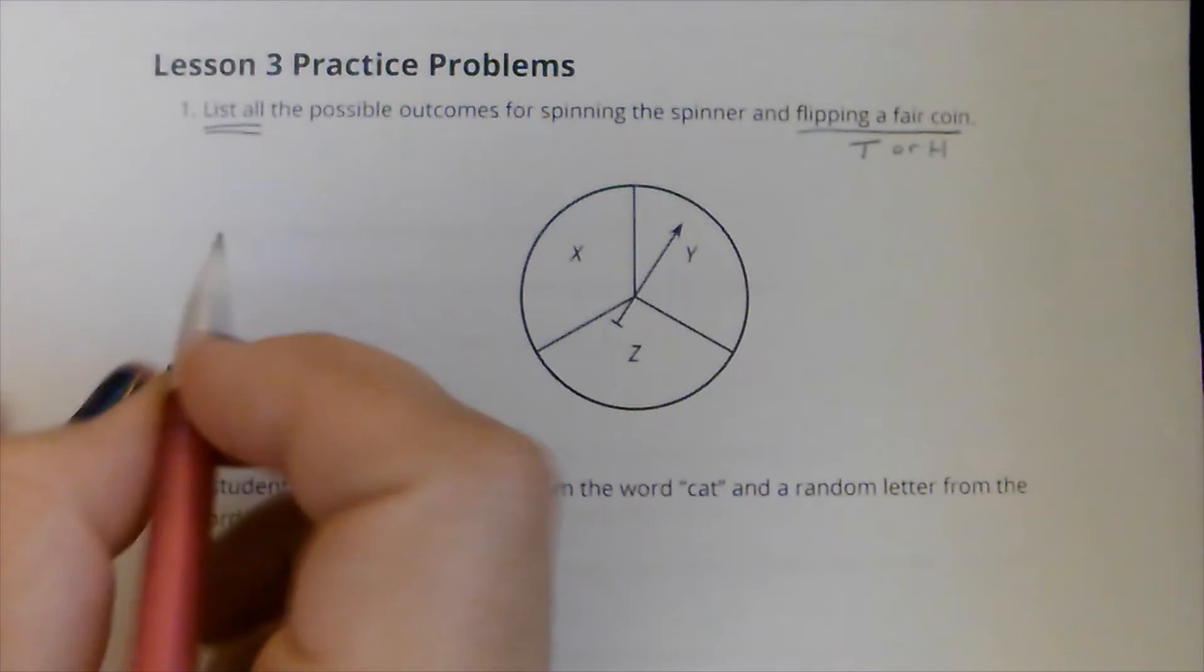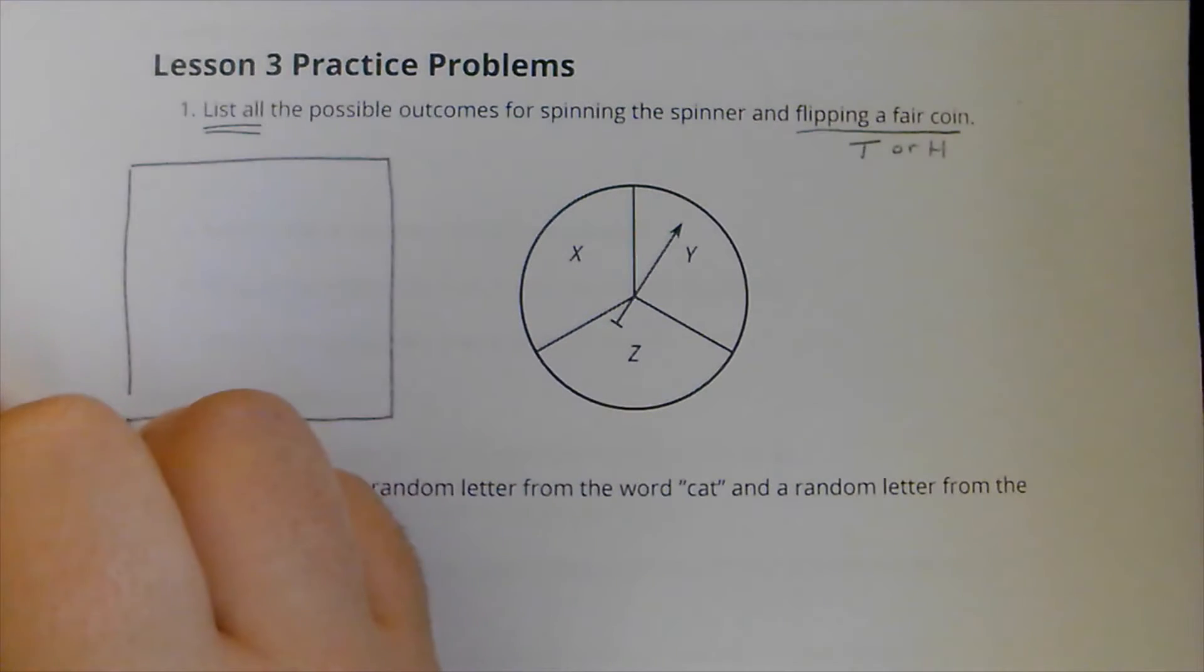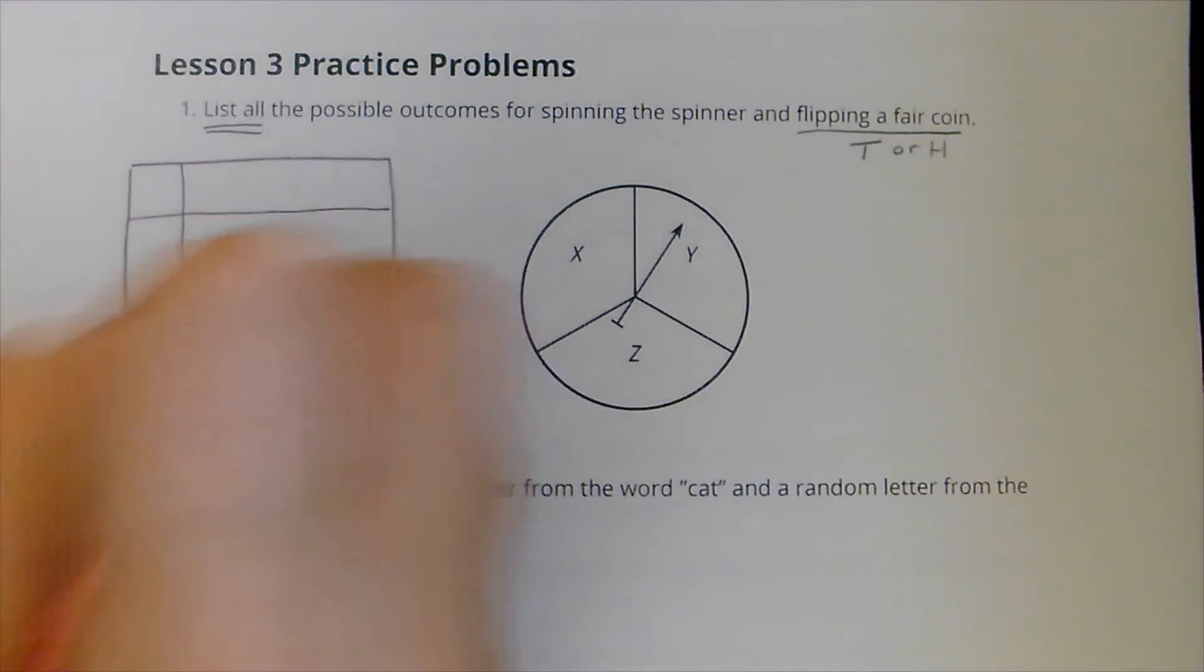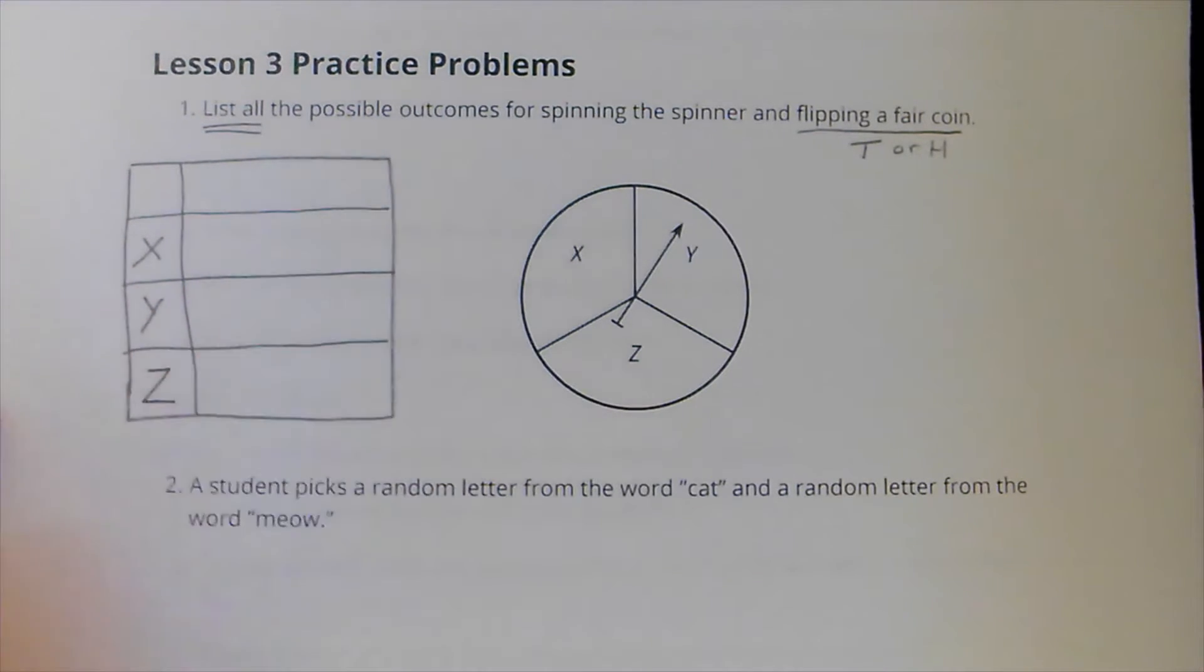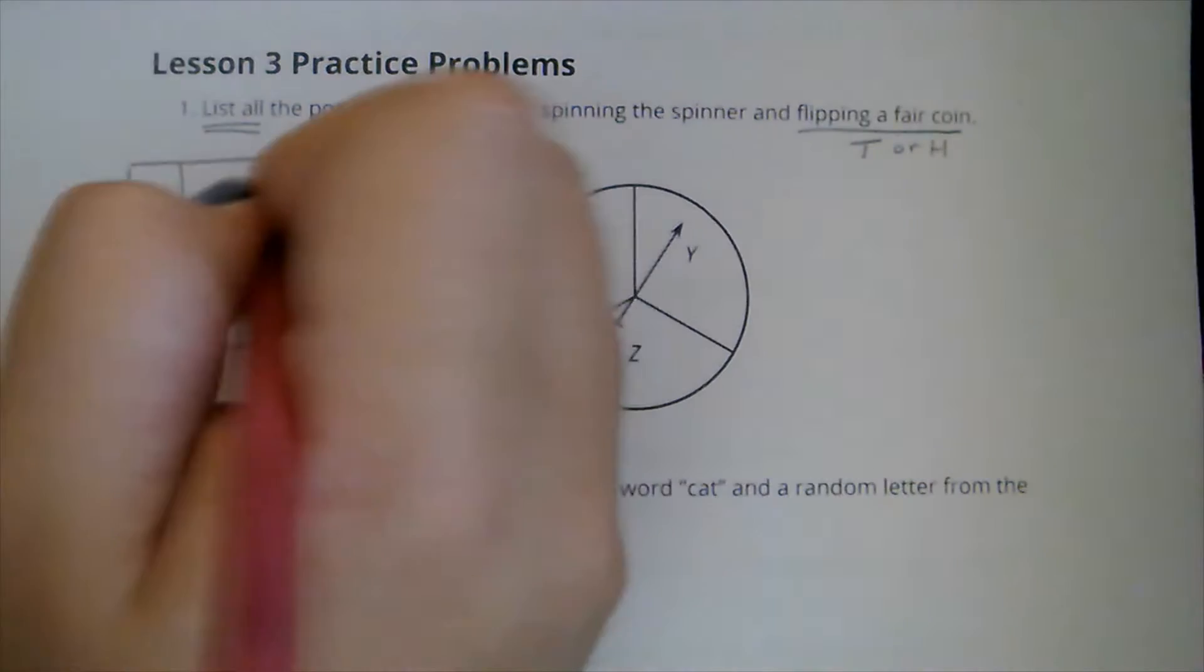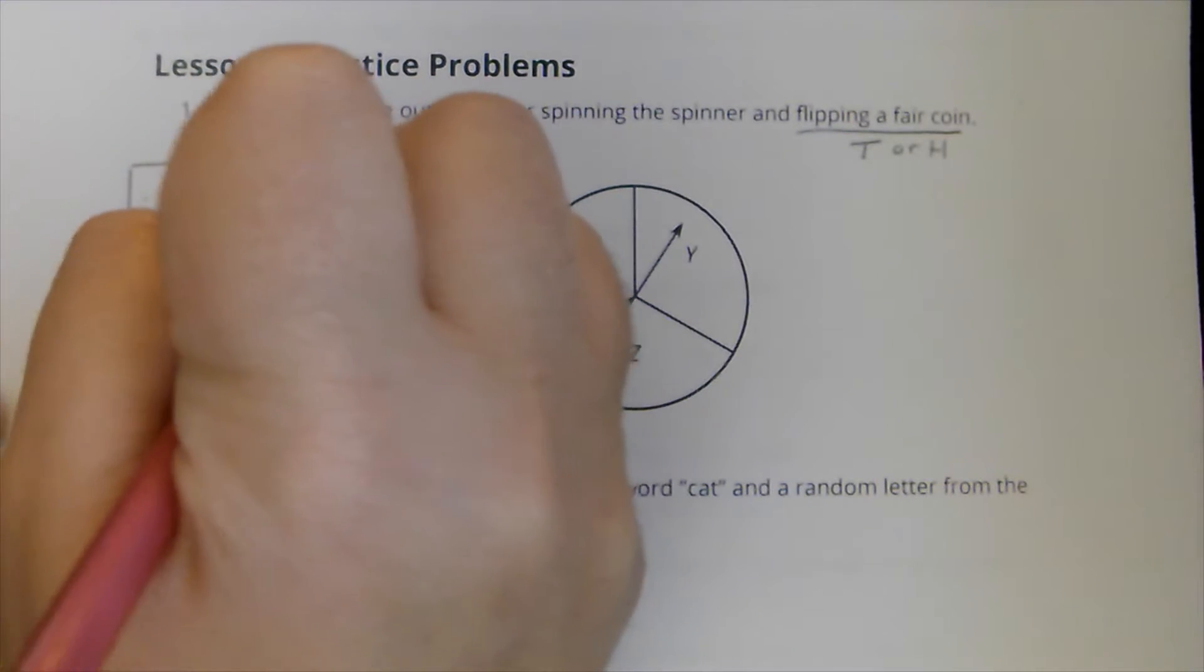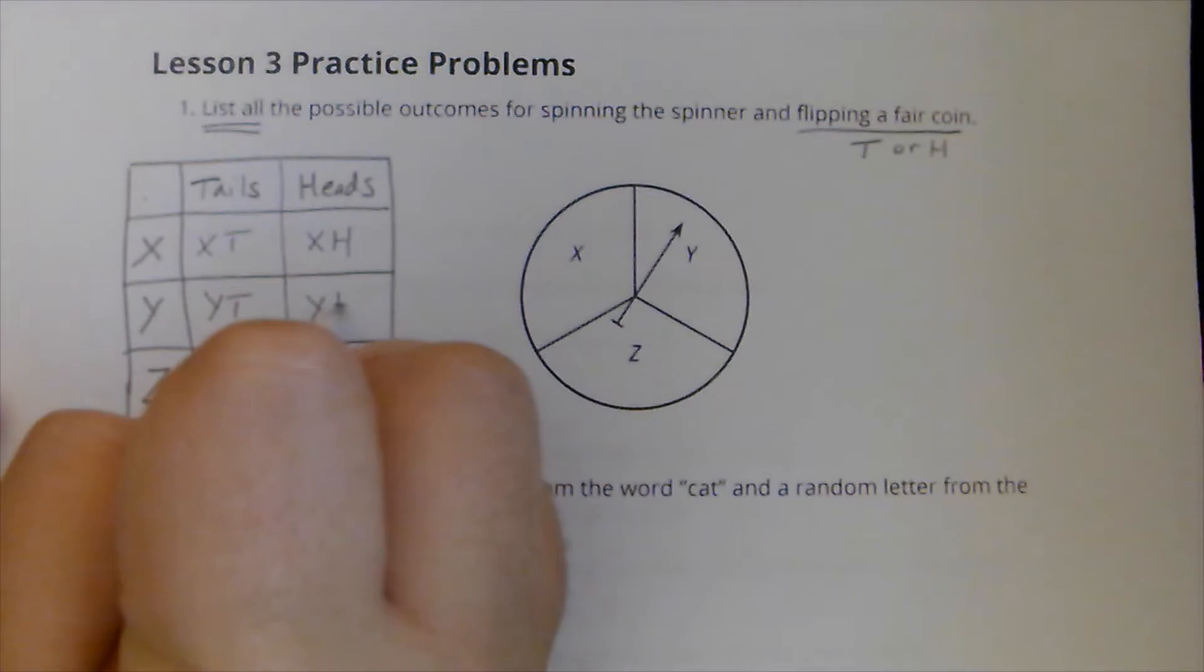One of the ways that we looked at creating a sample space was we looked at creating a table to help us list that out. So what I'm going to do is I'm going to put the options for what I could spin on the spinner in the rows. So I'm going to put X, Y, and Z on the rows. I'm going to leave this one blank. And then across the top, I'm going to put the options for the second thing, which is flipping a fair coin. This is going to be tails or heads.